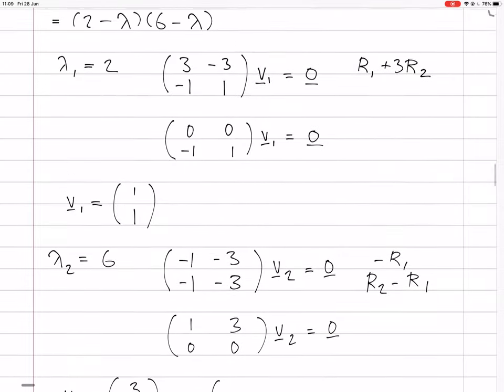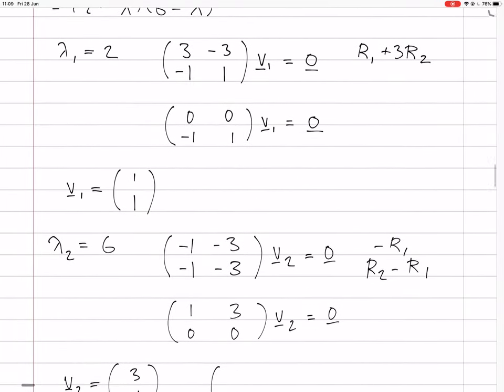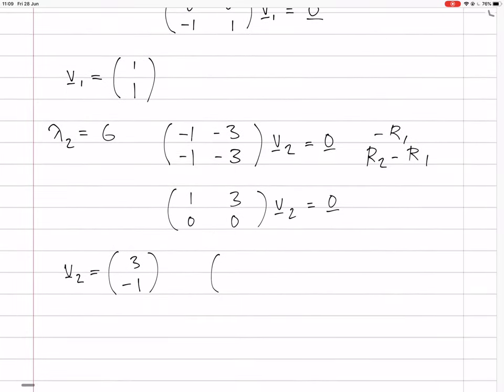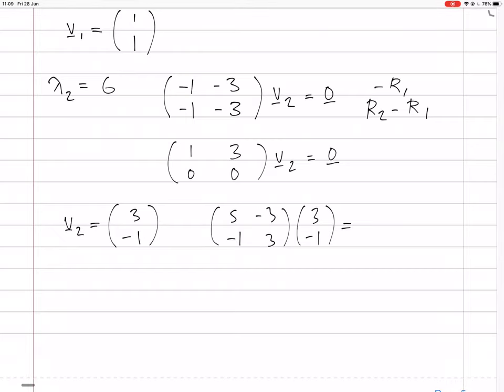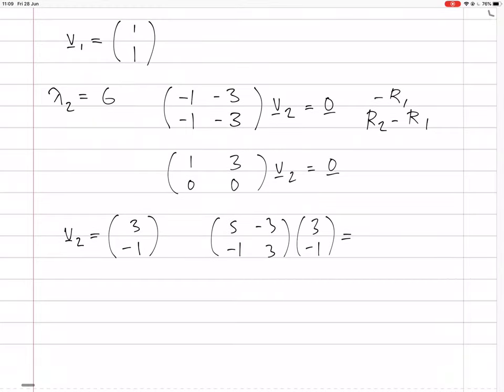Let's check that. The matrix was 5 minus 1 minus 3, 3. You multiply that by 3 minus 1. You get 15 plus 3 is 18. Minus 3 minus 3 is minus 6. And that is indeed 6 times 3, minus 1. So that eigenvector and eigenvalue are also correct.